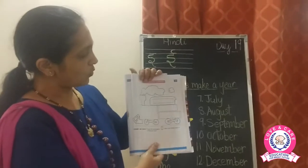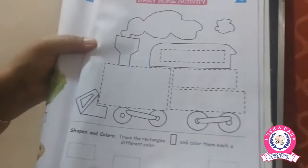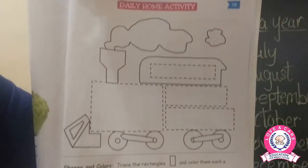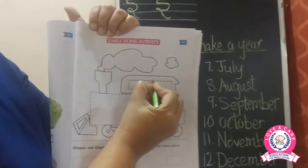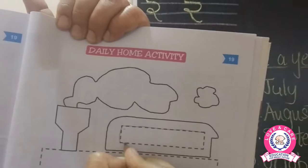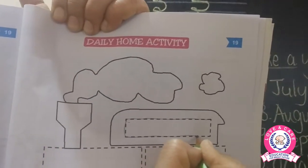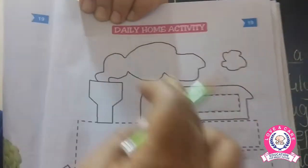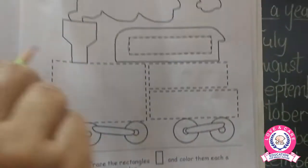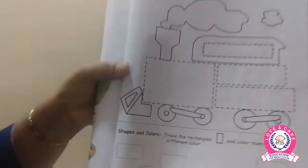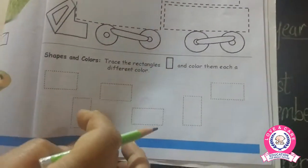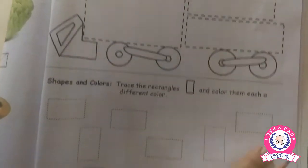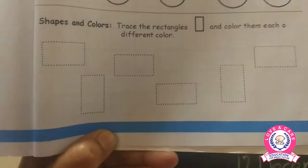Now coming on to the next picture — here you have to trace the given rectangles. First you have a train engine, and then you have to color it. Below, shapes and colors are given — trace the rectangles and color them each a different color. We have given a lot of rectangles in sleeping or standing position, and you have to trace all of them using your pencil.